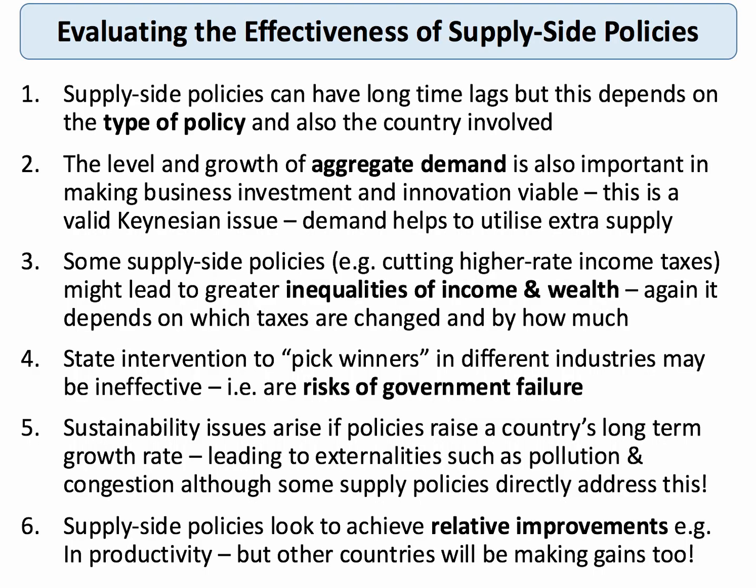So how do we evaluate supply-side policies? Supply-side policies can have long time lags, but it's far too easy at AS to just say that — it won't get you many marks. The time lags depend on the type of policy and the country involved. For example, offering affordable childcare and increasing investment in childcare facilities is not going to take 10–20 years to have an effect — it can work within months. The Crossrail project had a long gestation, but its success will fast-forward future infrastructure planning and reduce time delays. So time lags are there and important, but don't assume they're always long — supply-side policies can have quite significant short-term effects.